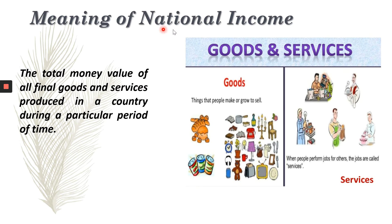Let us come to the meaning of National Income. The total money value of all final goods and services produced in a country during a particular period of time is called National Income. In a layman's term, it is the total money value of all the goods and services produced in a country during a particular period of time. This is the meaning of National Income.